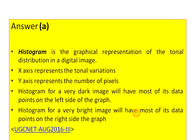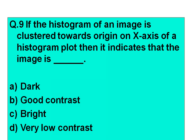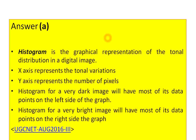The answer is option A, dark. A histogram is the graphical representation of the tonal distribution in a digital image. Note: the x-axis represents the tonal variations and the y-axis represents the number of pixels. A histogram for a very dark image will have most data points on the left side of the graph, while a bright image will have most data points on the right side. Since the origin is on the left-hand side, the answer is dark.